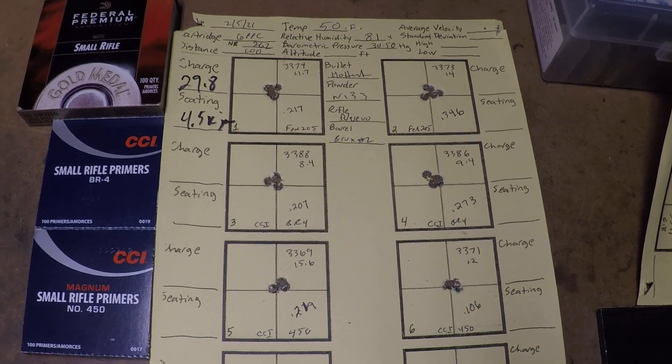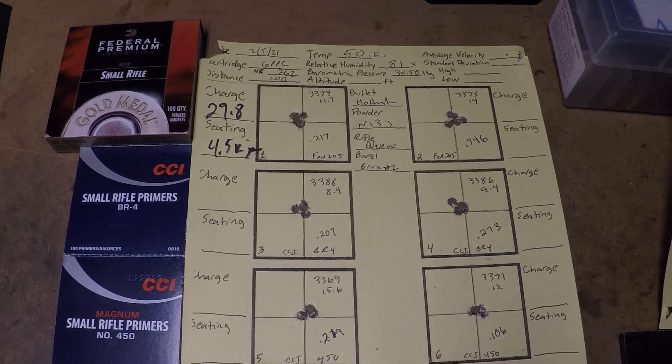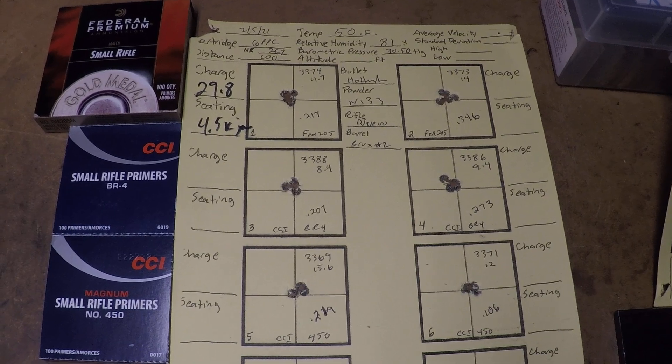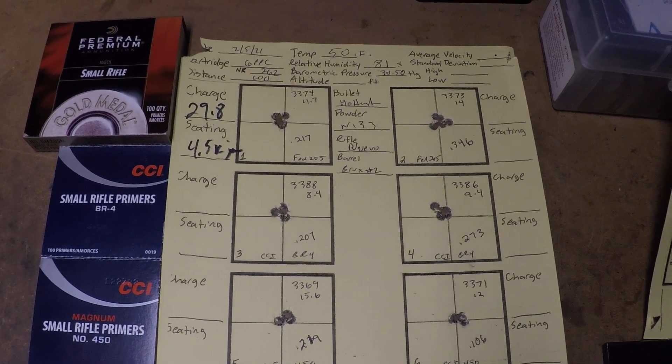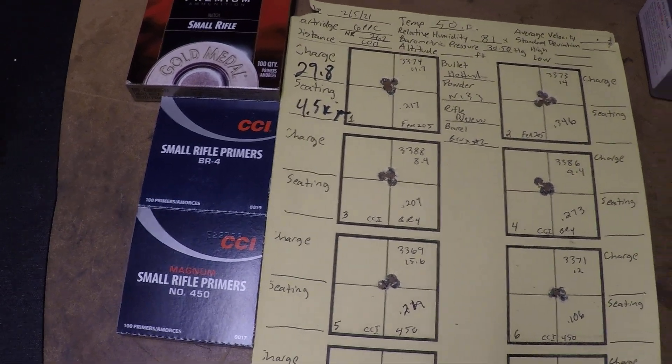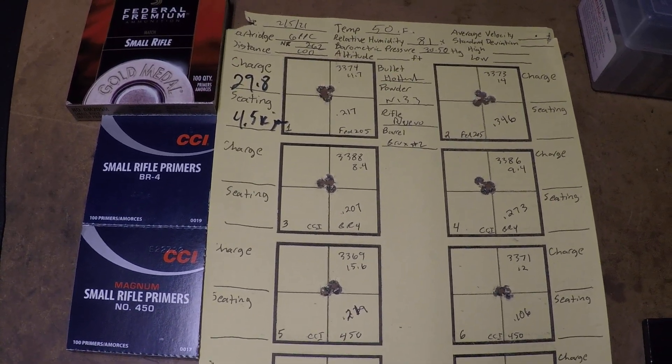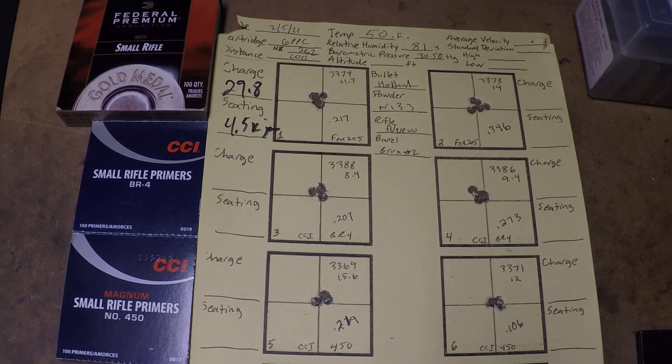We utilized the 6 PPC cartridge, again with the .262 neck, went out and shot it at 100 yards, loaded up 10 rounds of each of these primers using the same charge. We used 29.8, 4.5 thousandths jam.